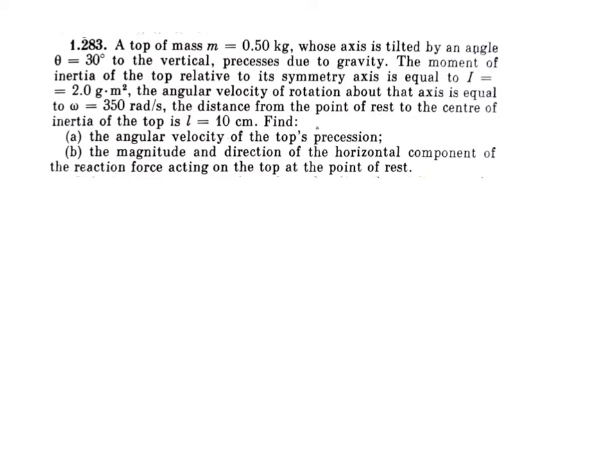In this problem, a top of mass m = 0.5 kg whose axis is tilted by an angle of 30 degrees to the vertical precesses due to gravity. This is a problem on precession motion. The moment of inertia of the top relative to its symmetry axis is I, the angular velocity of rotation about that axis is 350 radians per second, and the distance from the point of rest to the center of mass is l.